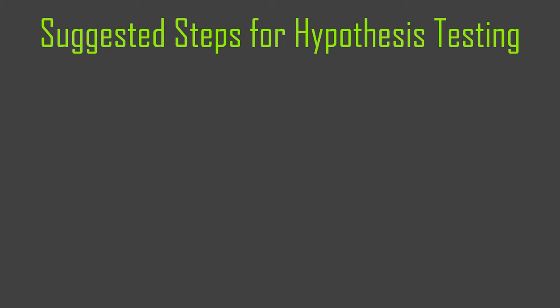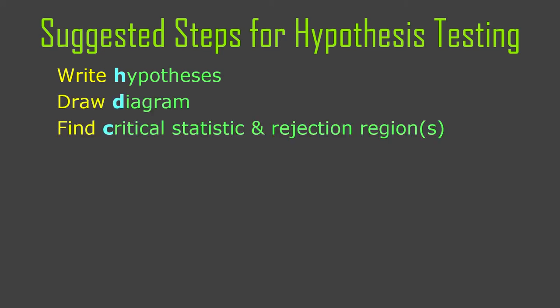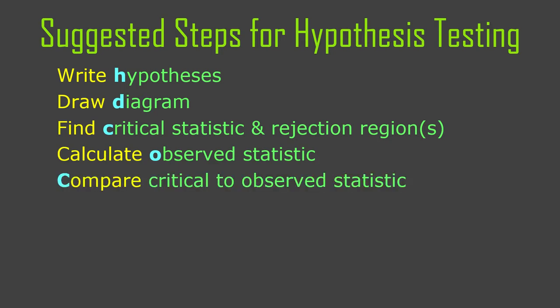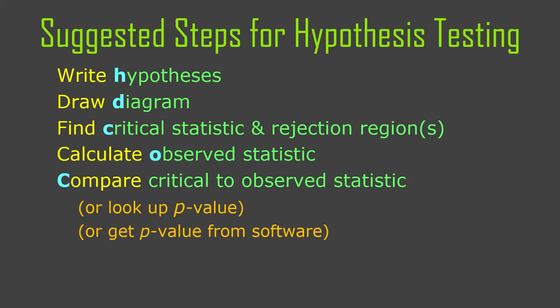Before we dive in, I have these suggested steps as I mentioned in class 4 on hypothesis testing. I suggest you write out the hypothesis first, draw a diagram and label as much on it as you can, find a critical statistic and the rejection region or regions. That's not the only way to do things, but I'll talk about that more as we go on. Calculate your observed statistic — in this case, the z-value that goes with your sample mean. Then compare the two, the observed and the critical. Or you can look up the p-value, or get it from software. We're going to go through these examples assuming you're using the critical statistic and rejection regions version of things, rather than calculating the p-value itself.